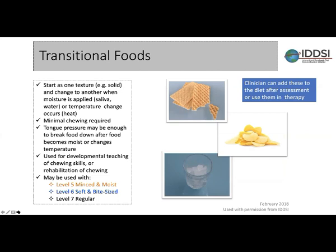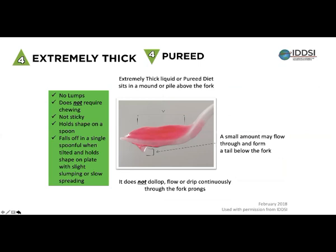Transitional foods are foods that start as one texture or solid and change to another when moisture, saliva, water, or temperature is applied. This includes what some call dissolvable or meltable solids — in disability settings these are very often used. Minimal chewing is needed; tongue pressure may be sufficient once the food is moistened. Often used for developmental skills, but also valuable for someone on Level 5 who is looking for something more recognisable as food and has the chewing ability to cope with it — it's worth assessing for quality of life.